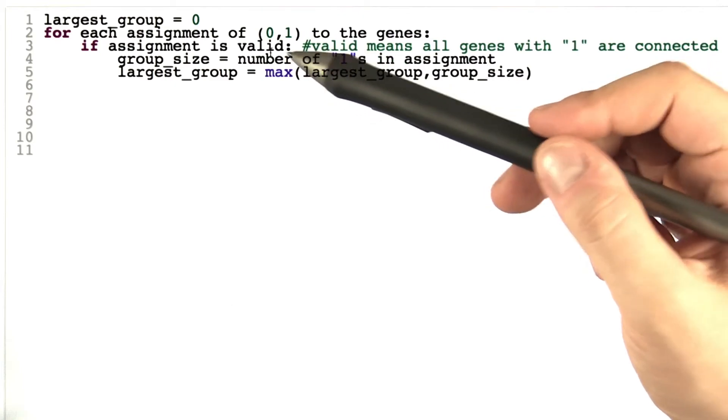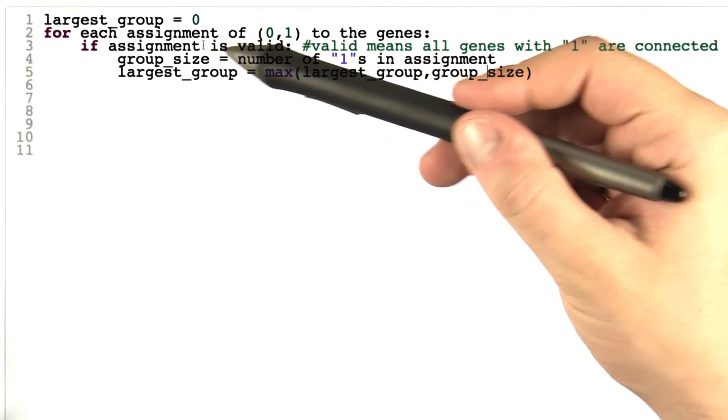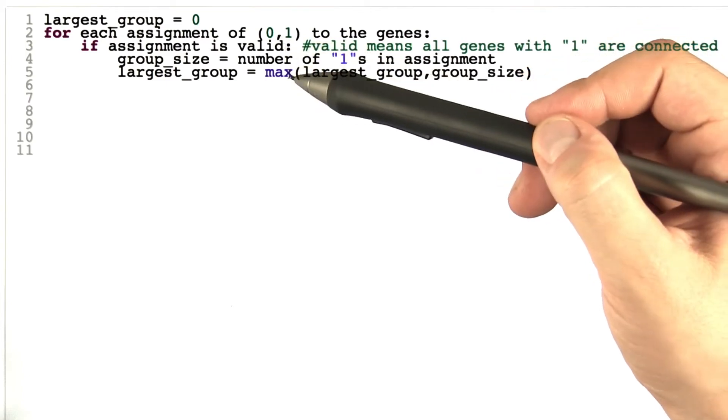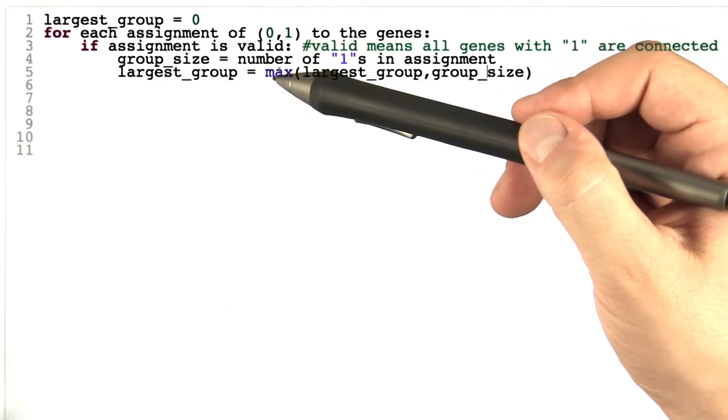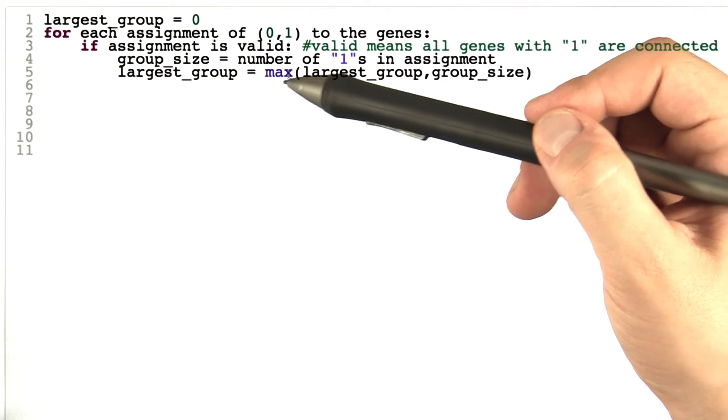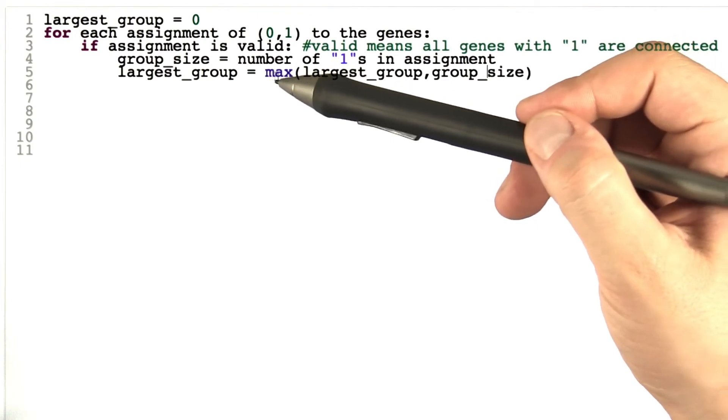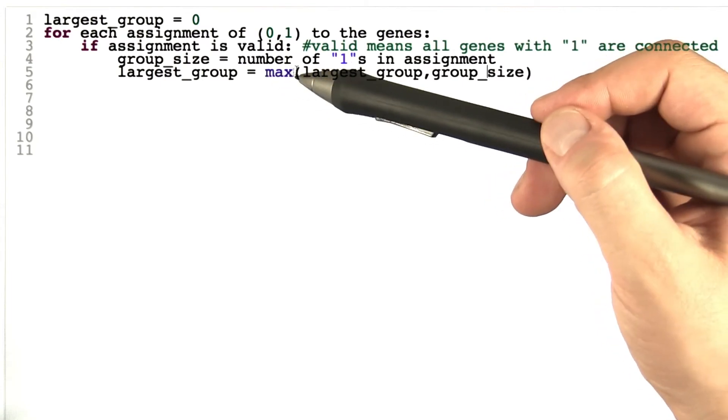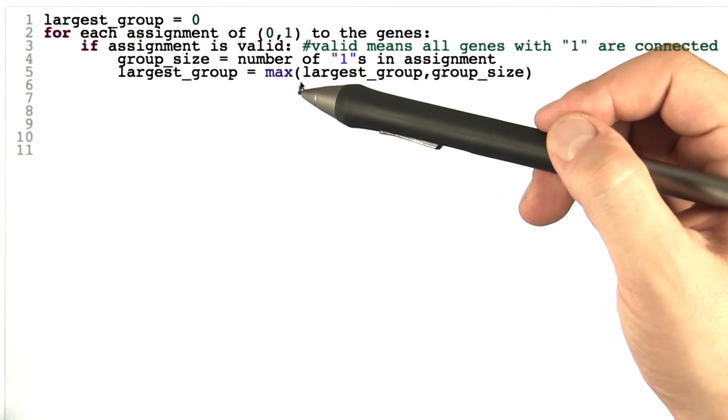The main difference to Alice's algorithm are two things. One is, it's a bit different which type of assignment we consider as valid and the other one is that now we're not looking for a group of genes or communication centers that is as small as possible, but now we are looking for a group of genes that is as large as possible.